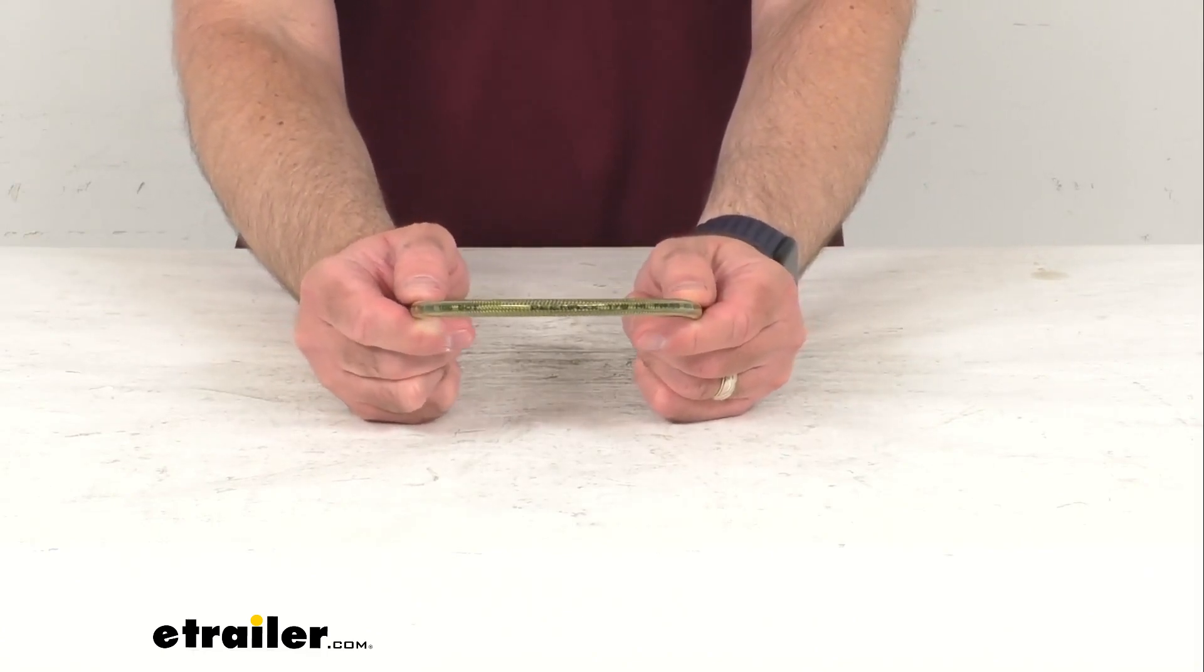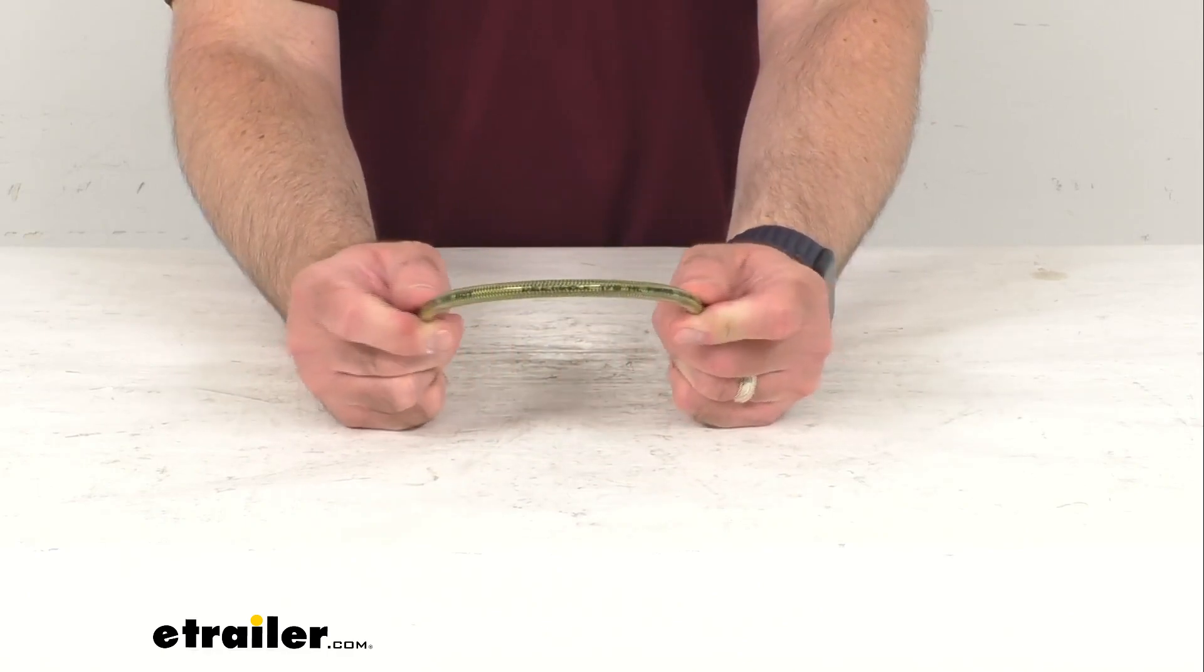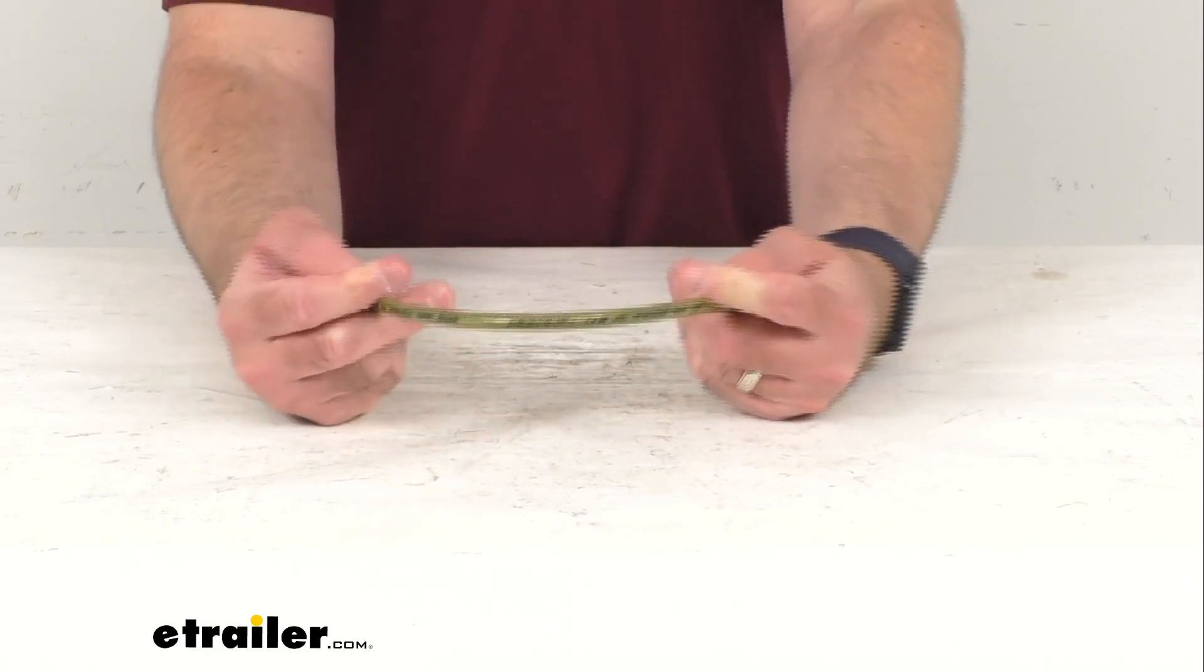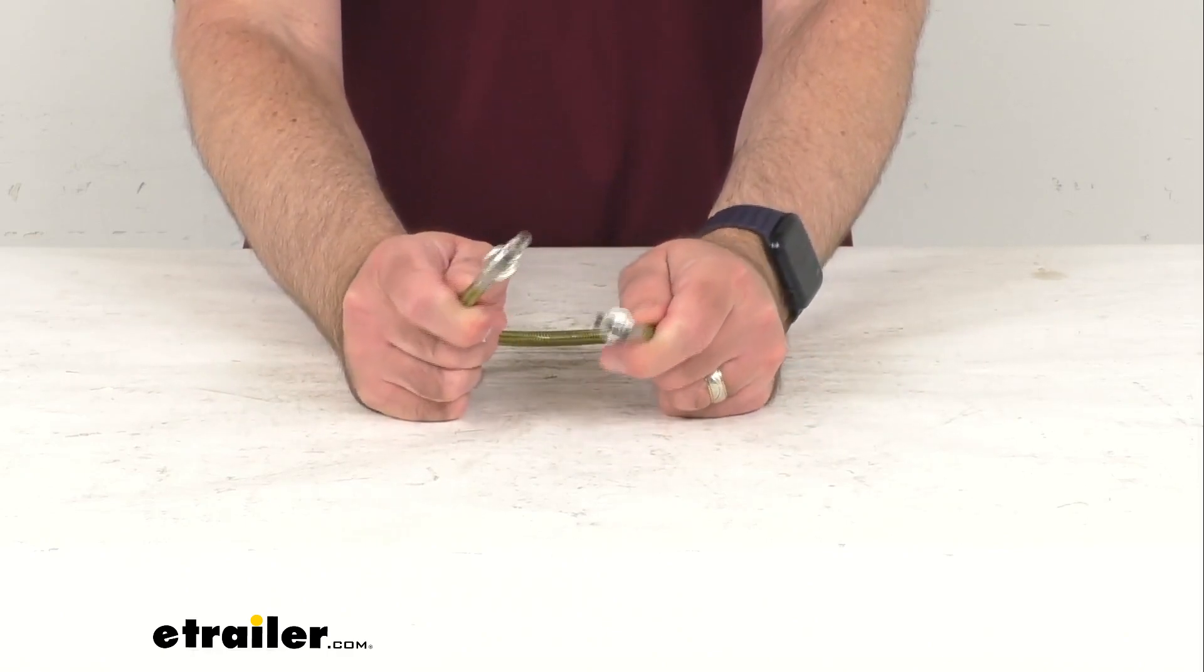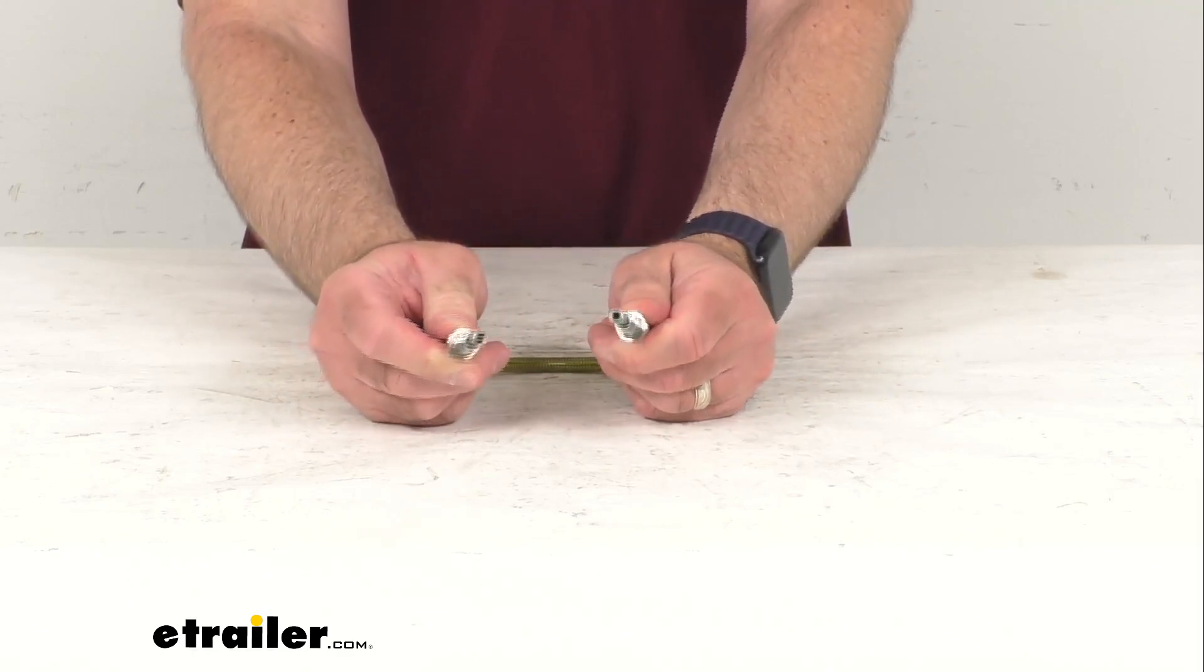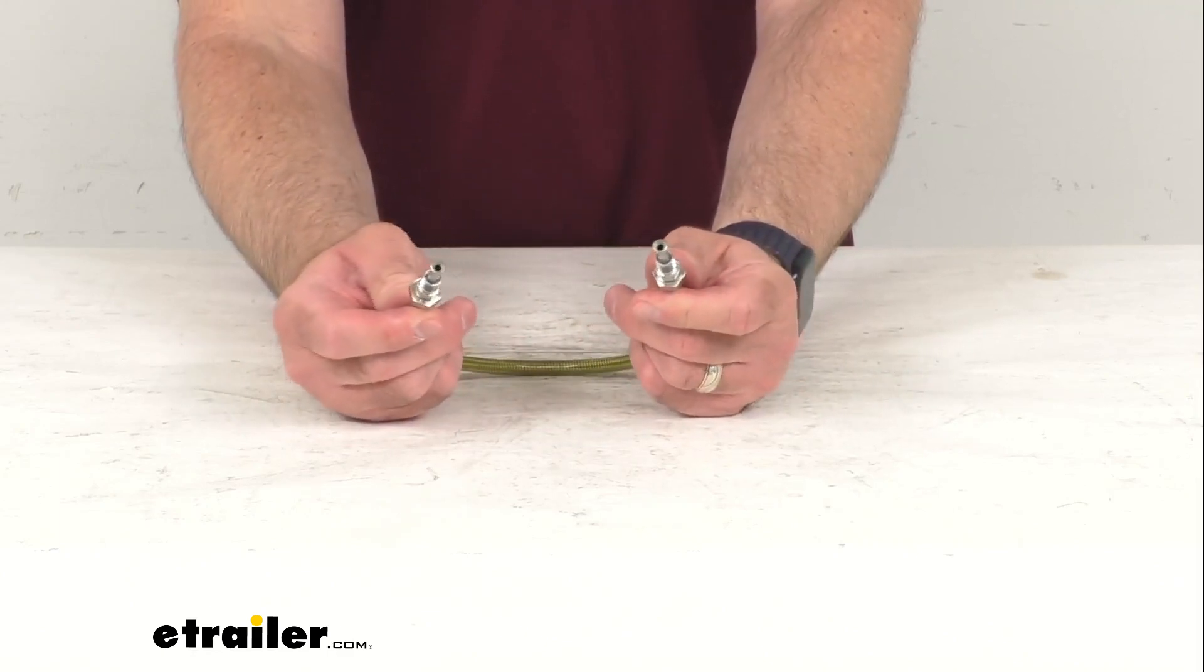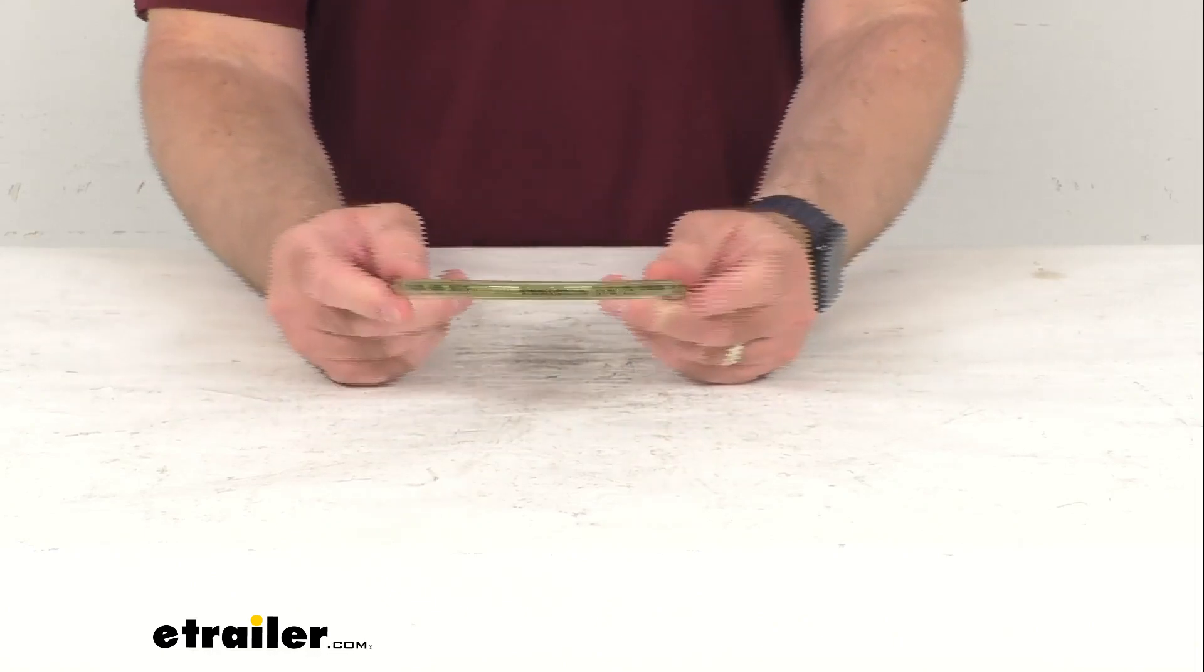This braided stainless steel hose has a Teflon core that withstands pressure better than rubber, so your brakes are more responsive. It responds better to different temperatures than rubber, which can expand due to heat, and it's less likely to get a puncture from debris.